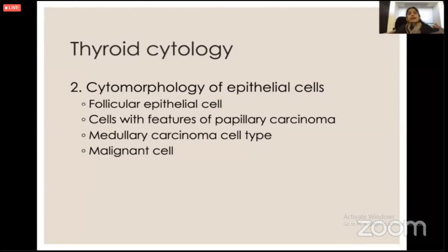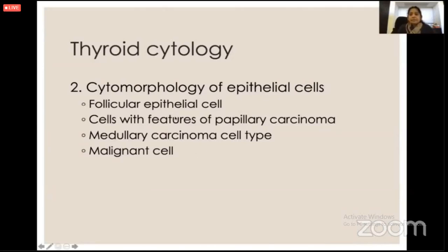For medullary carcinoma, I look for spindle morphology, certain types of granules, and neuroendocrine appearance. I also consider whether cells look absolutely malignant and of another type. Never forget that there are many non-thyroid cells that can appear in thyroid samples — always look through those aspects. The most important feature for me is the shape of the cell: are they round or oval? That is one of my most important criteria.